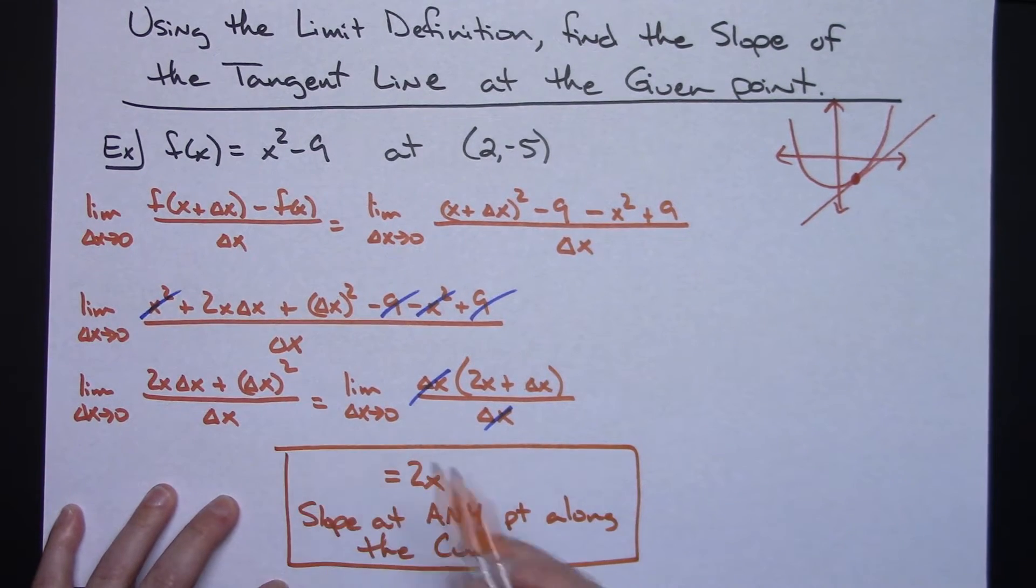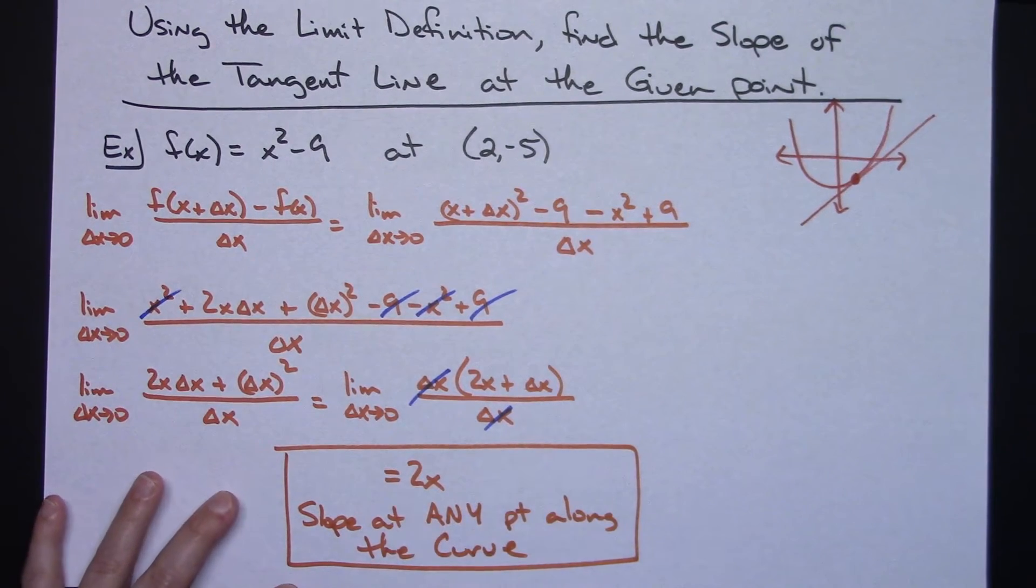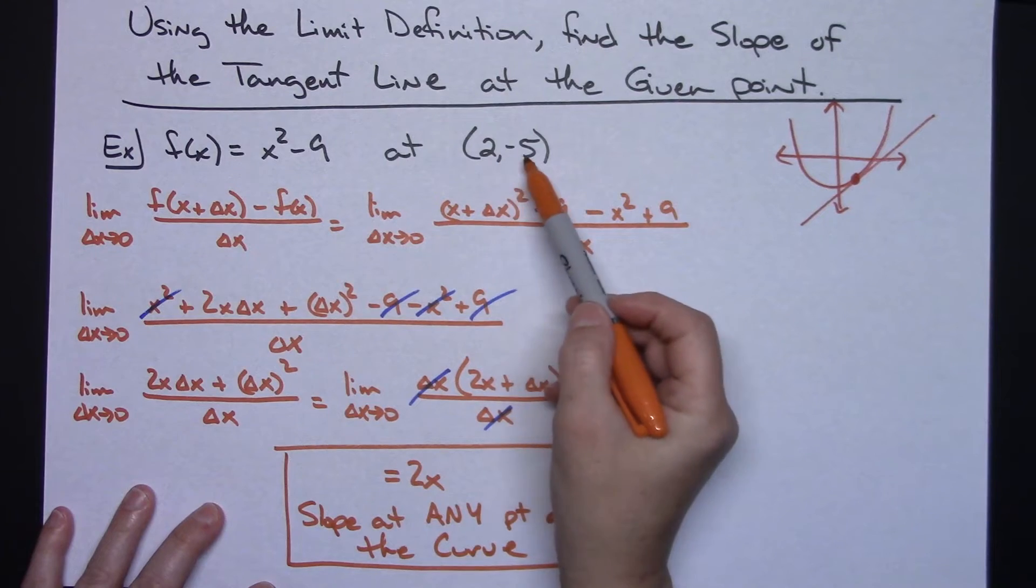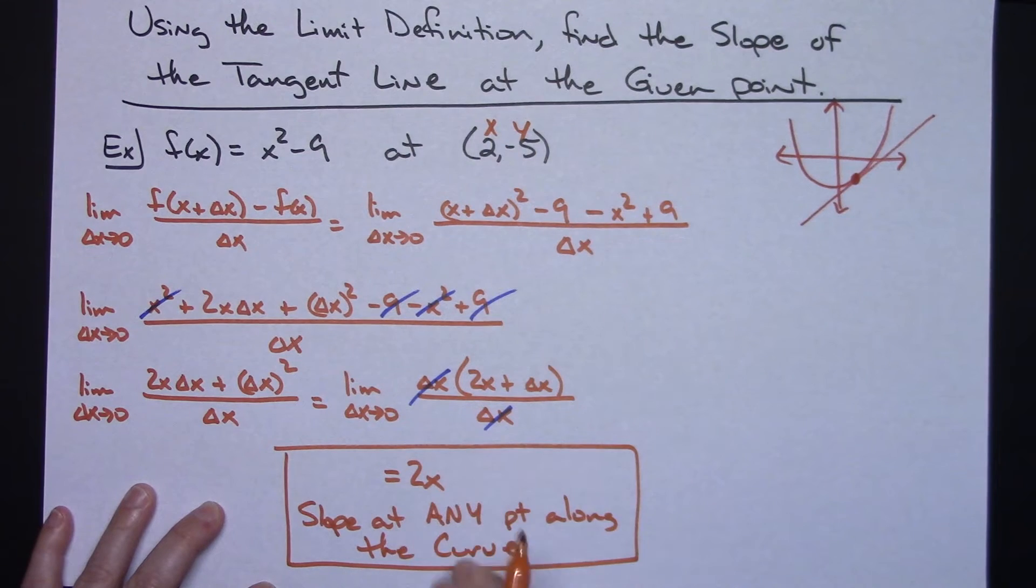That 2x gives me the slope at any point along the curve. That's a really good conceptual part right there - that 2x gives me the slope at any point along this curve, no matter where I picked. But this question very specifically wants the slope at 2 negative 5.